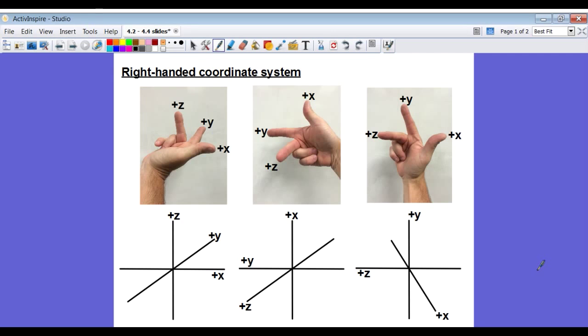Here are three different orientations of the right-handed coordinate system. So you can see in each of these three pictures, my hand is oriented in a different way, and it shows the corresponding locations of the plus x, the plus y, and the plus z axes.